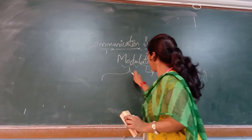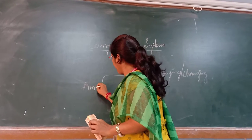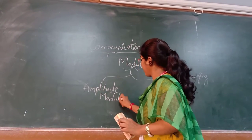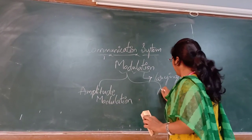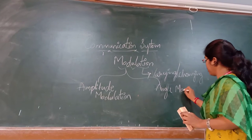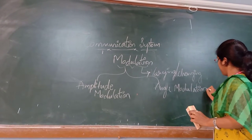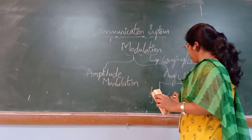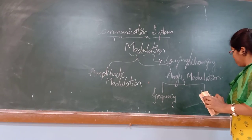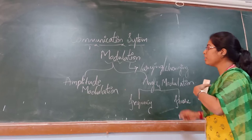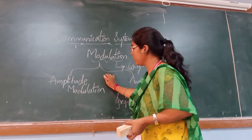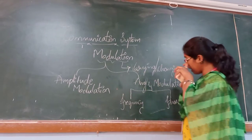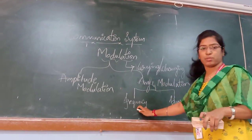Modulation takes place in two forms. One is amplitude modulation, and angle modulation. In angle modulation, it is again divided into two types: frequency modulation and phase modulation. So these are the basic modulation techniques involved in the communication system. Amplitude modulation and angle modulation — within angle modulation we have frequency modulation and phase modulation.